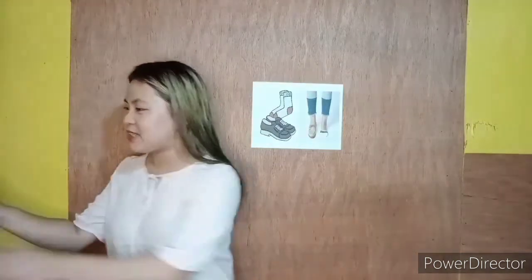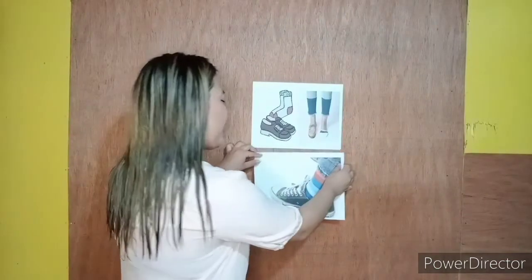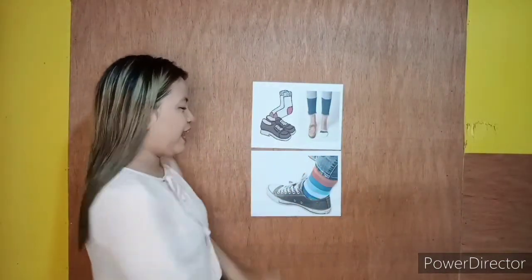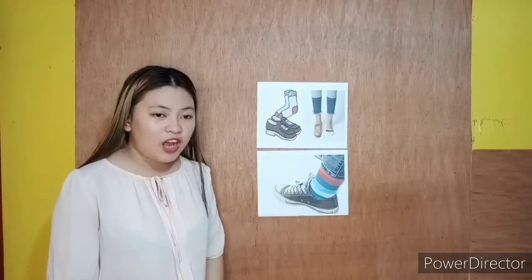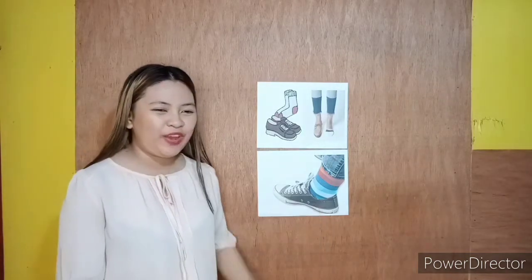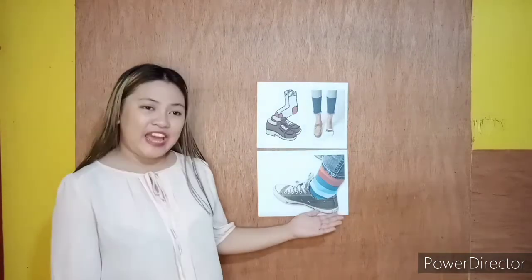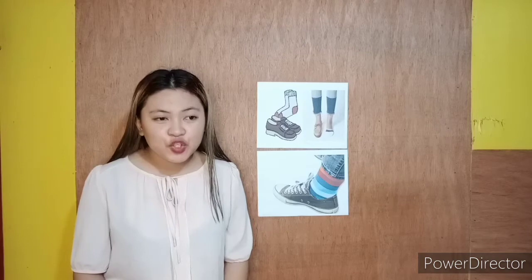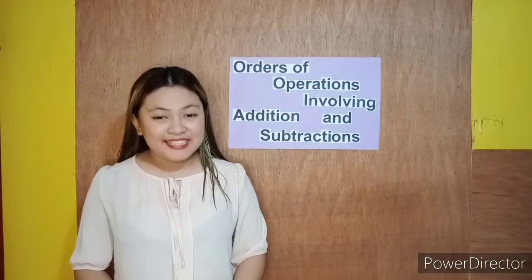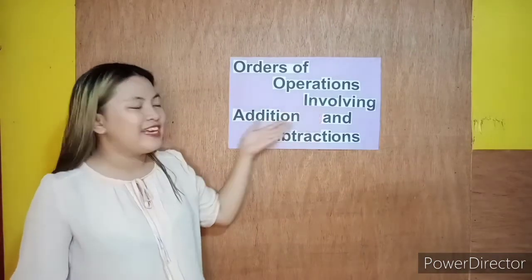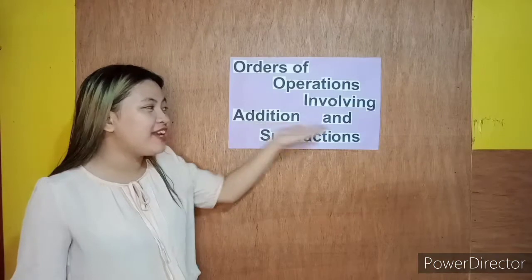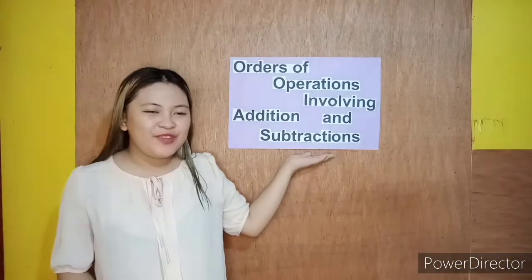So we wear it like this one here. As you can see, the foot first wears the sock before wearing the shoe. So just like in real life and in math, we follow or do things in a certain order to make sure they turn out right. Today we will be discussing about orders of operations involving addition and subtraction.